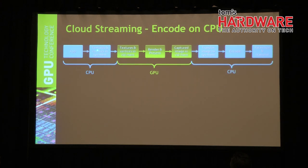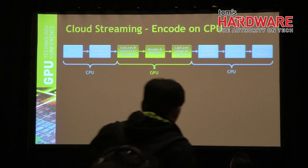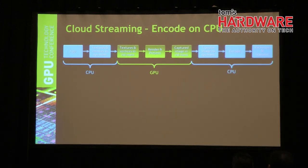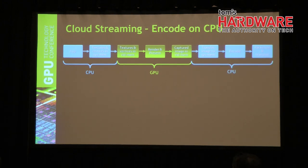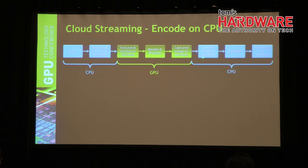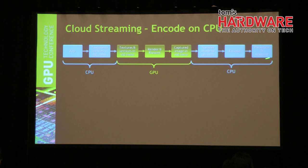In the pipeline: an app creates textures and vertices in system memory, transfers those to video memory, and the GPU renders the scene. That image is captured through Windows or Linux APIs, or NVIDIA's own framework. If you want to do encoding on the CPU, you need to transfer the image back to system memory, which creates a lot of problems — bandwidth, power, and latency. Then you encode, packetize, and transmit.